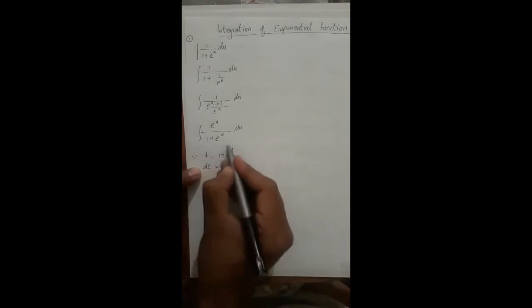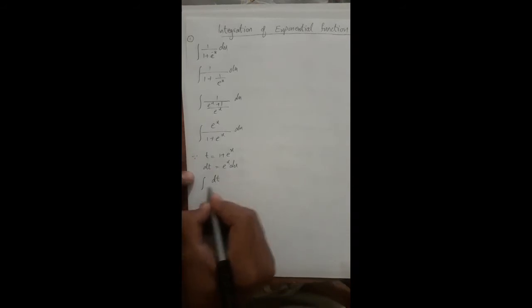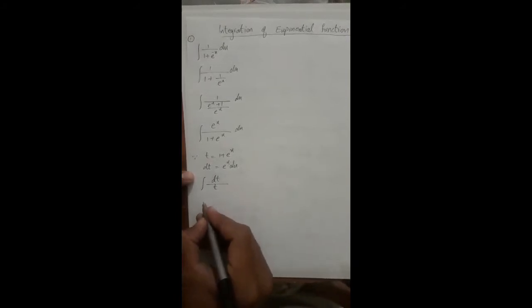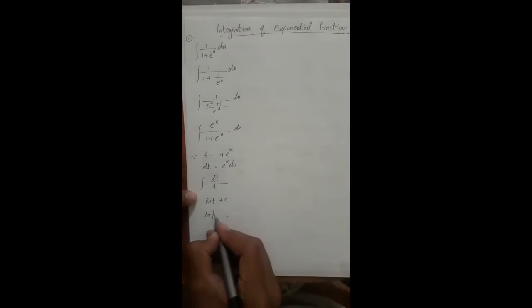We replace e^x dx with dt and replace (1 plus e^x) with t. The integral becomes 1/t dt, which gives log of t plus c. Substituting back, the answer is log(1 plus e^x) plus c. This is the integration by substitution method.